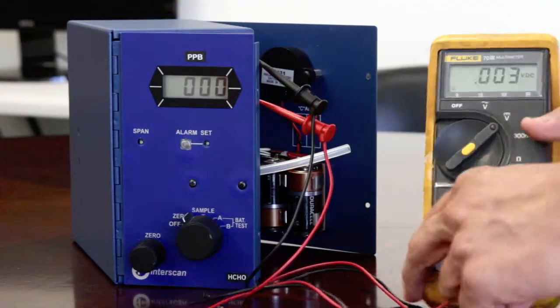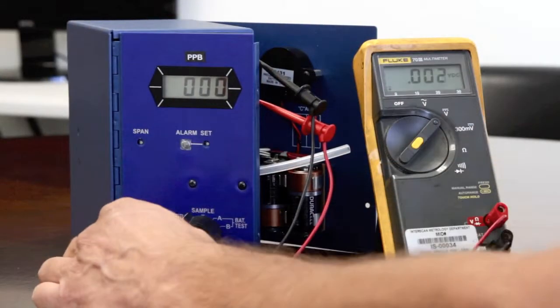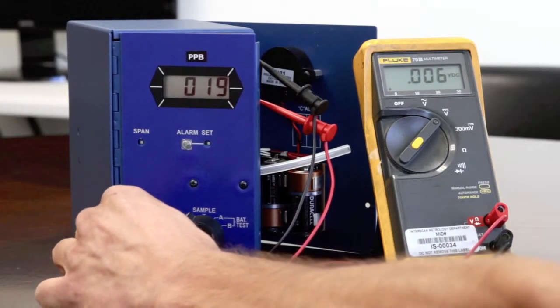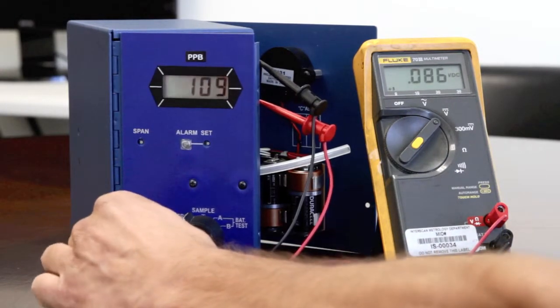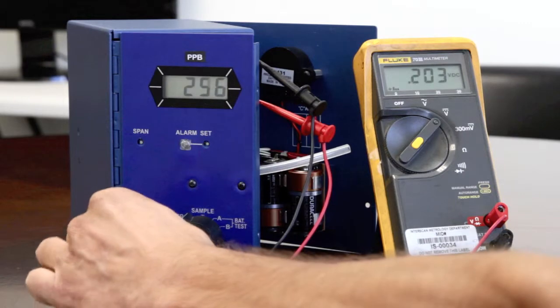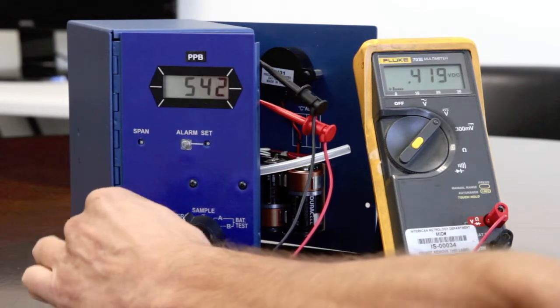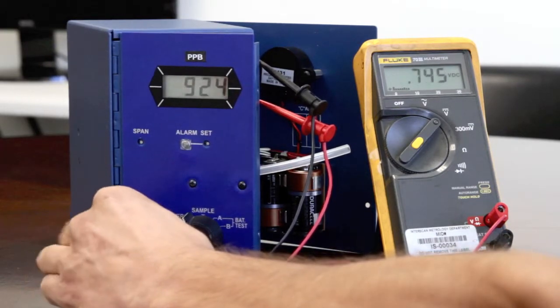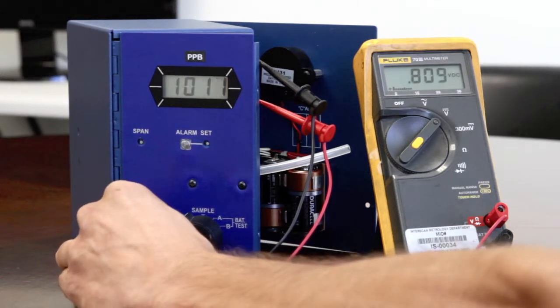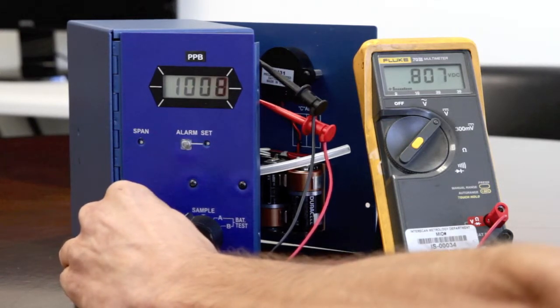Adjust the zero control upscale so that the digital voltmeter, not the analyzer, reads a number that is designated on your ECS certificate. For purposes of this demonstration, the digital voltmeter should read 800 millivolts.